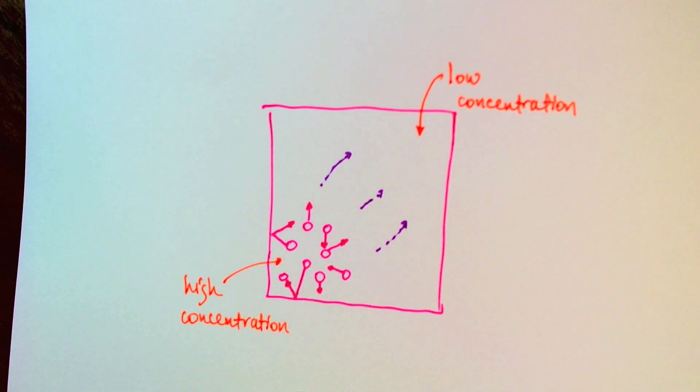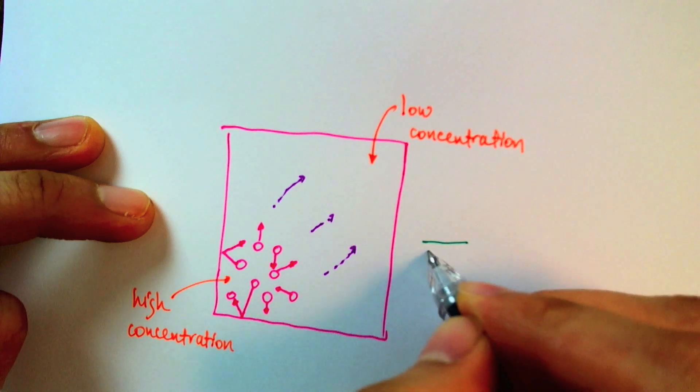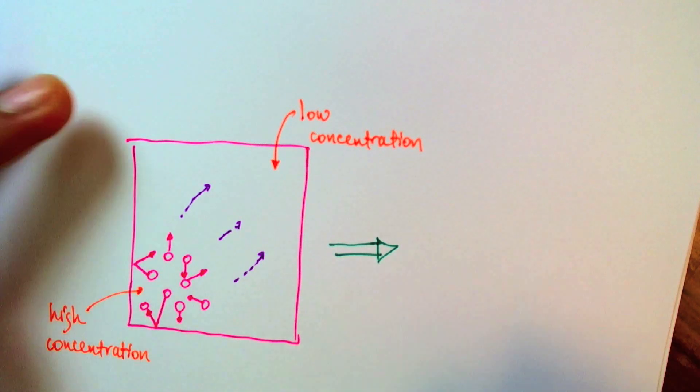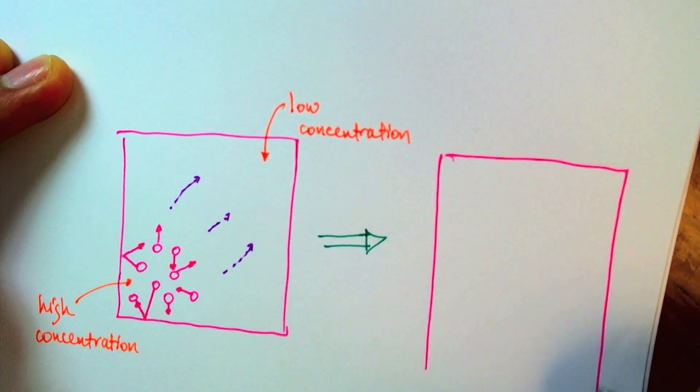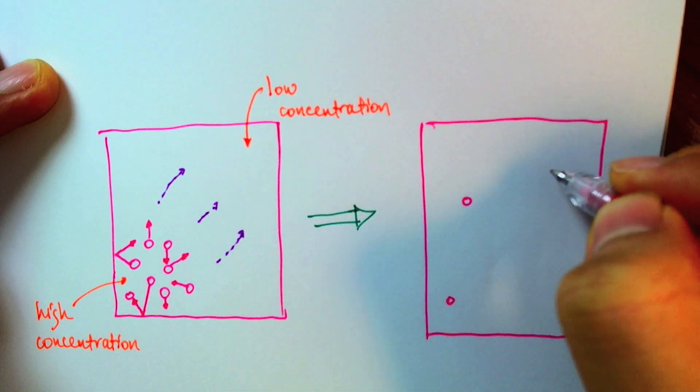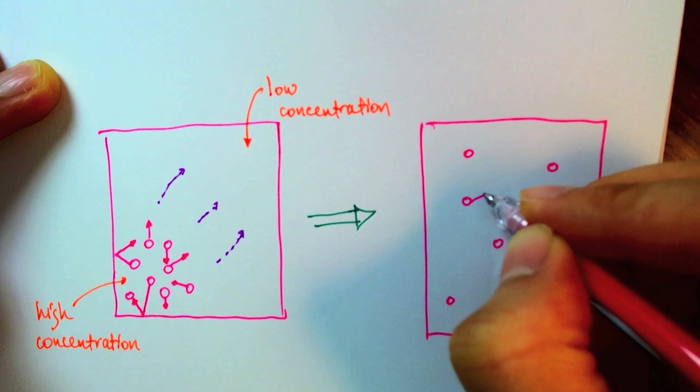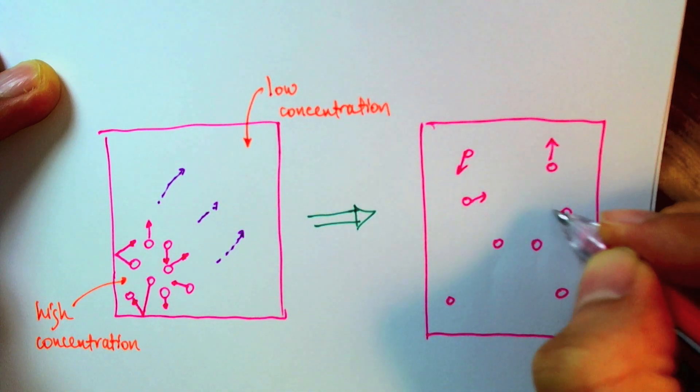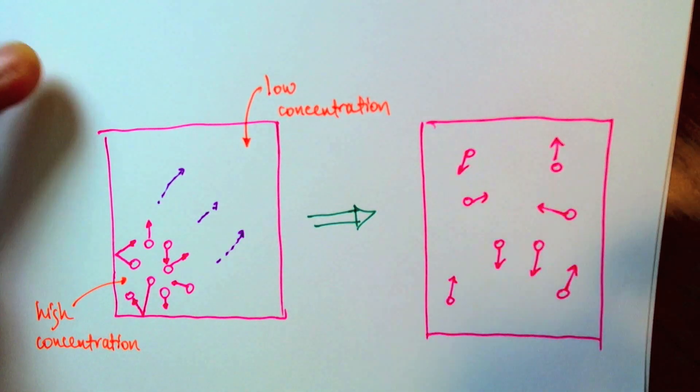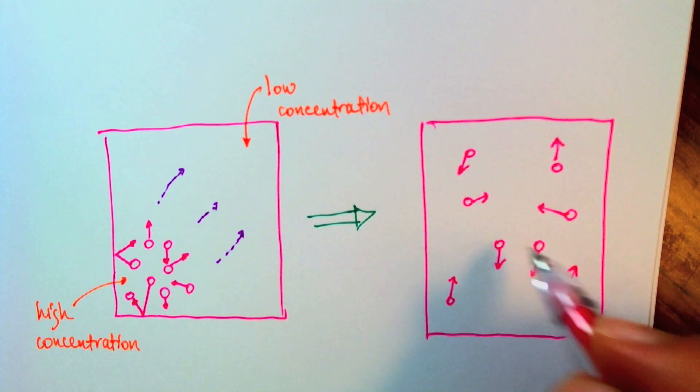And over time, you see that they start spreading out and fill the area that's less concentrated. After a while, what we see is the particles would have uniformly filled the container while still moving around randomly.